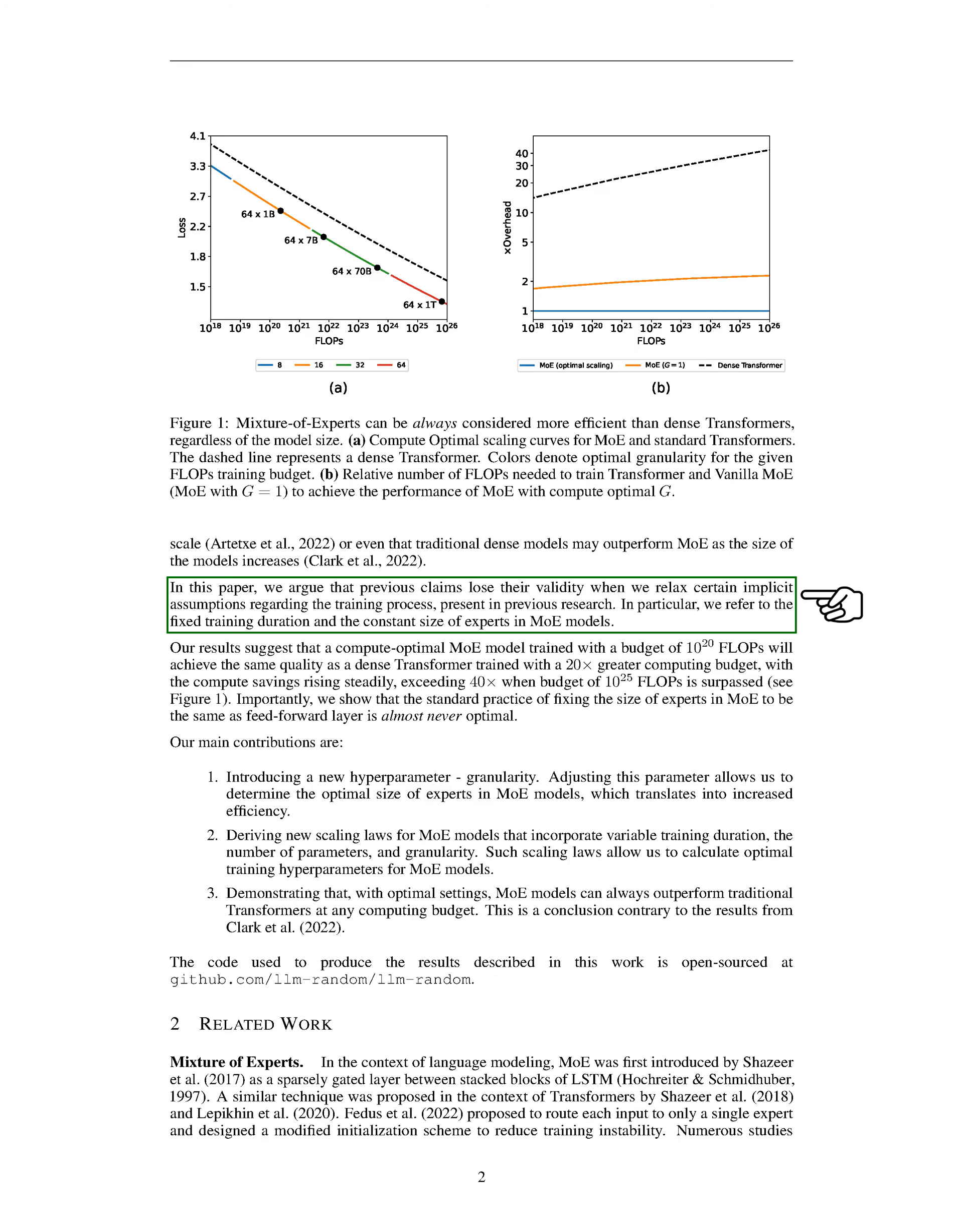In our paper, we challenge these assertions by questioning some underlying assumptions from previous research, specifically the fixed training duration and the constant size of experts in MoE models. We present findings that a MoE model optimized for computation, with a budget of 10 to the power of 20 floating point operations (flops), can match the quality of a dense transformer model that uses 20 times more computational resources. Moreover, the computational savings increase, surpassing 40 times when the budget exceeds 10 to the power of 25 flops.